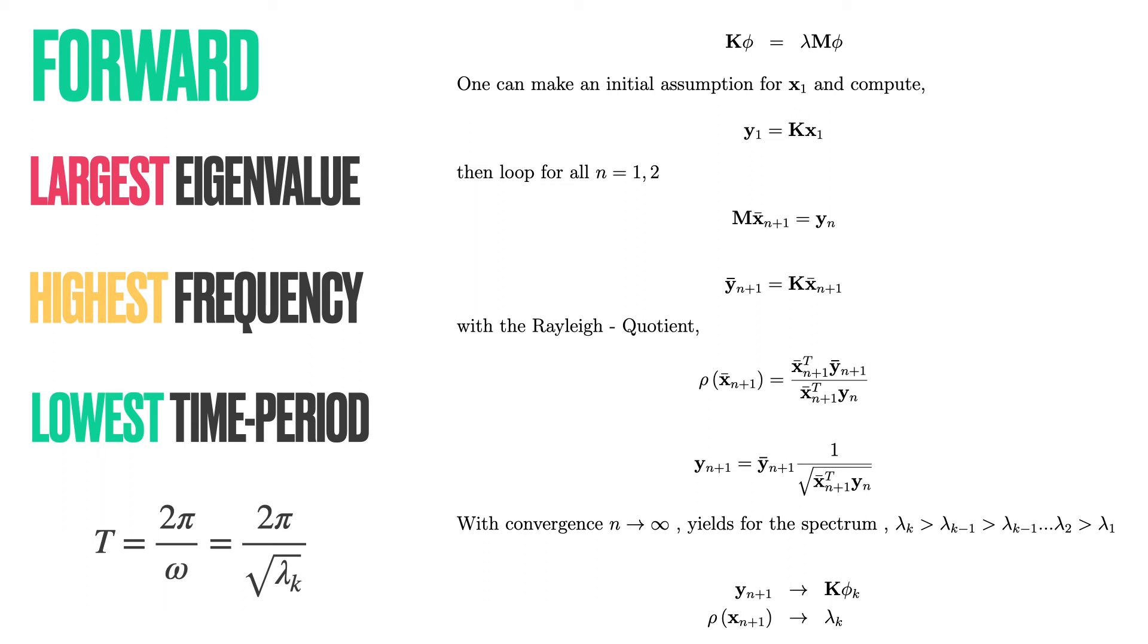Then we can start a loop. As we have y1, we can compute x bar 2 using a linear solver. From x bar 2, we can compute y bar 2 using matrix multiplication. Now, using the Rayleigh quotient, we can compute an approximation of the eigenvalue, which we denote rho.